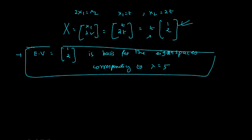Let's do a quick recap. First step: find the matrix. Second step: find the value of lambda using the characteristic equation — determinant of A minus lambda I equals 0. The next step: find the eigenvectors, also represented as capital X. These are the 3 steps.